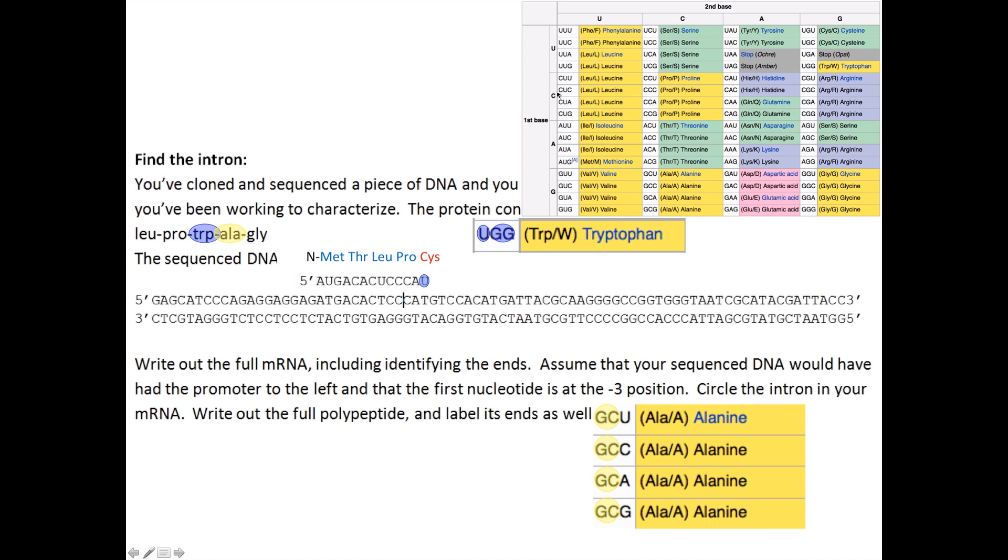Now, here I've brought out what we're looking for for our next amino acid, and that's alanine. Now, alanine has four possibilities for the codons, and they always start with GC.